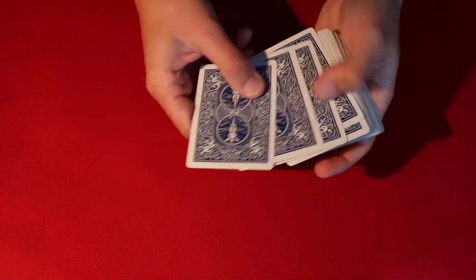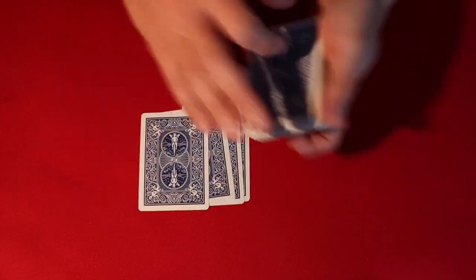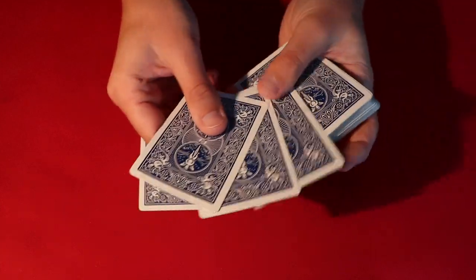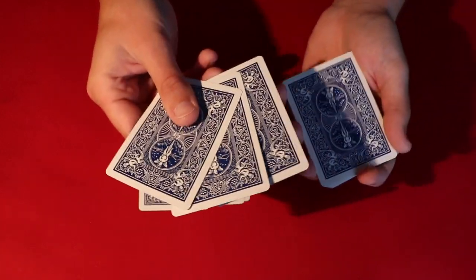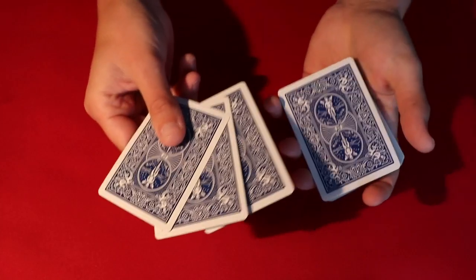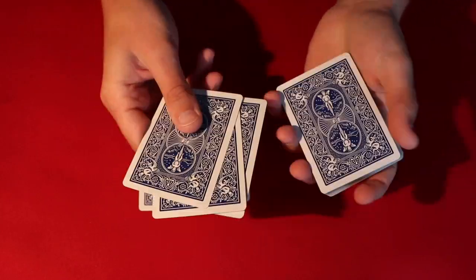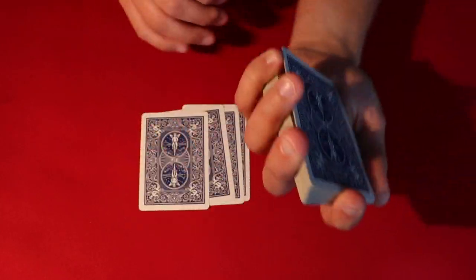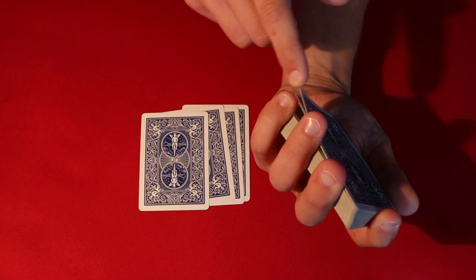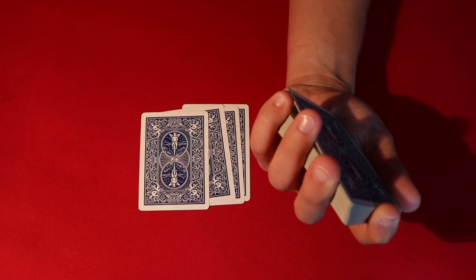You just take the four aces out and at some point you just need to get a pinky break underneath the top three cards, whatever they happen to be. So take, I would say before you start the trick, just take three cards and get a pinky break underneath them just like that. So now you have one, two, three cards.